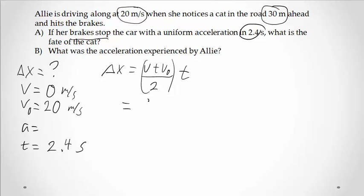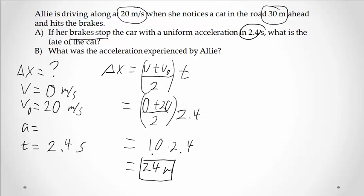So final velocity is 0, initial velocity is 20, over 2 times my time of 2.4 seconds. This guy is going to be 10 times 2.4. So I get 24 meters is the distance for when the car stopped. So I compare that to 30, and the cat is indeed alive. We stopped 6 meters short of where the cat was.